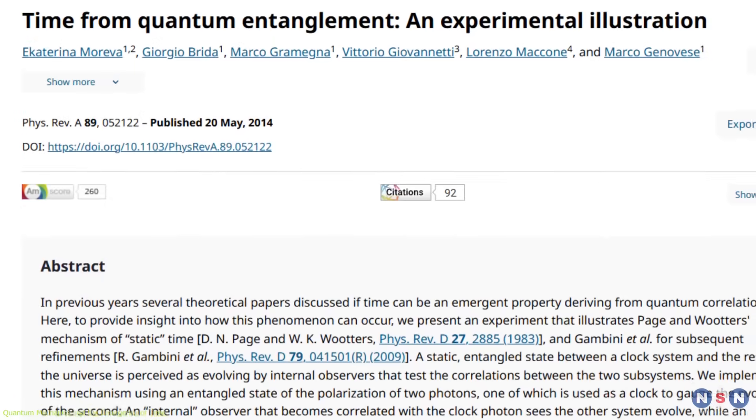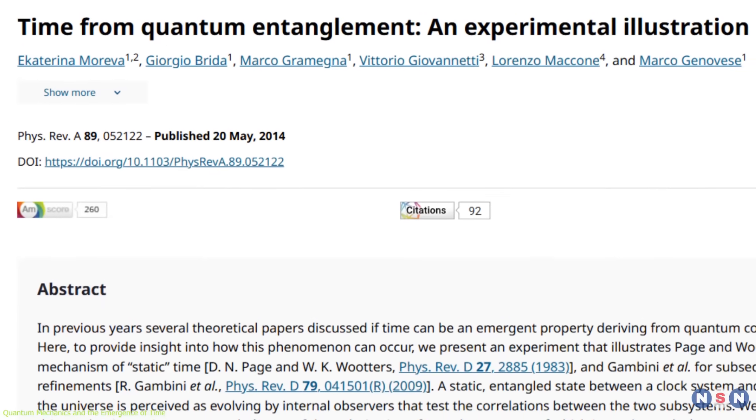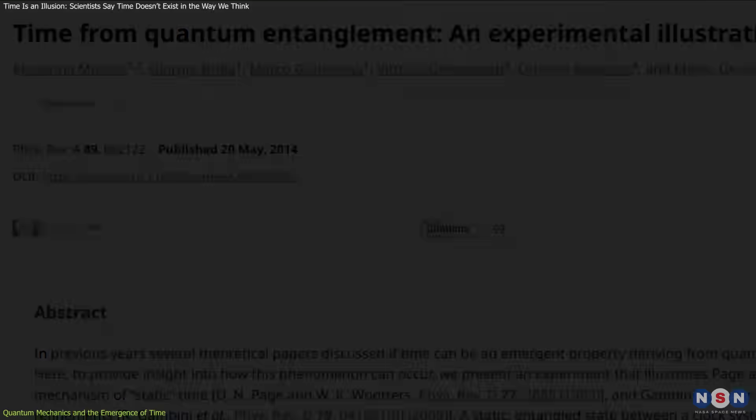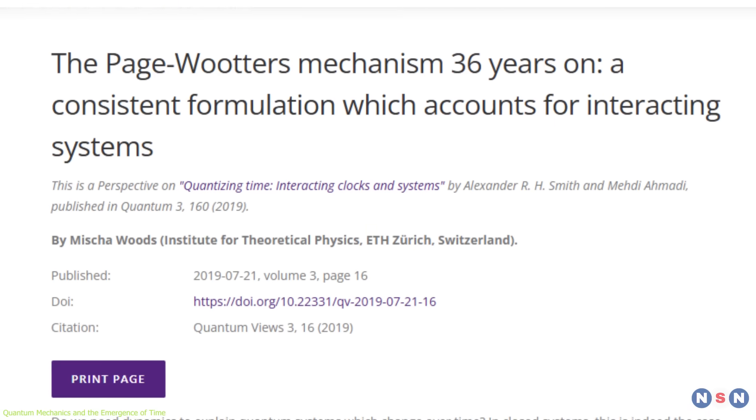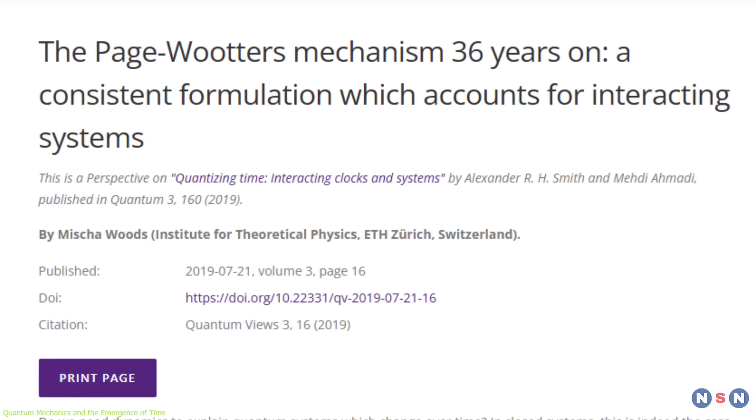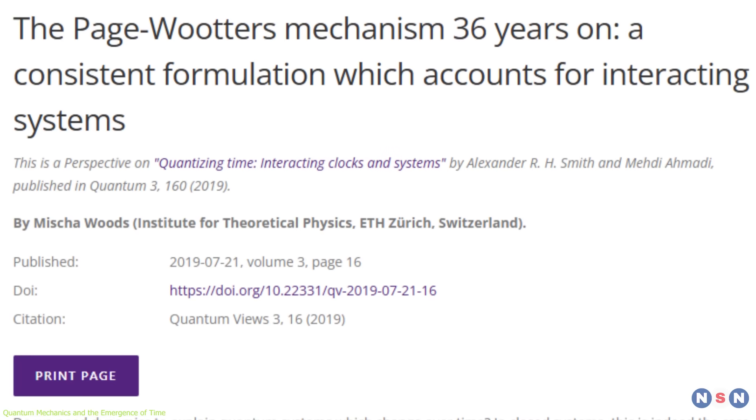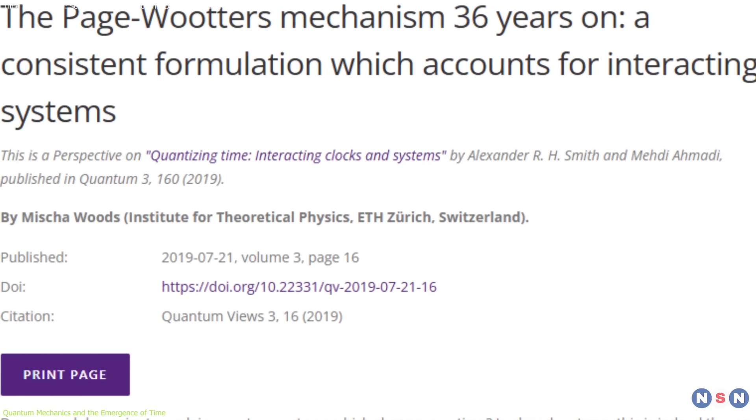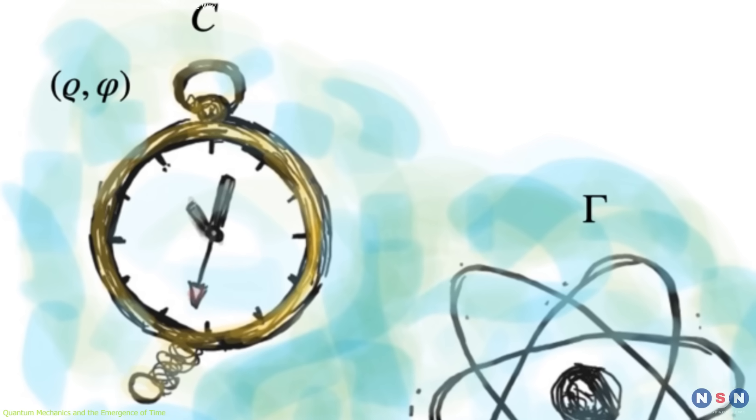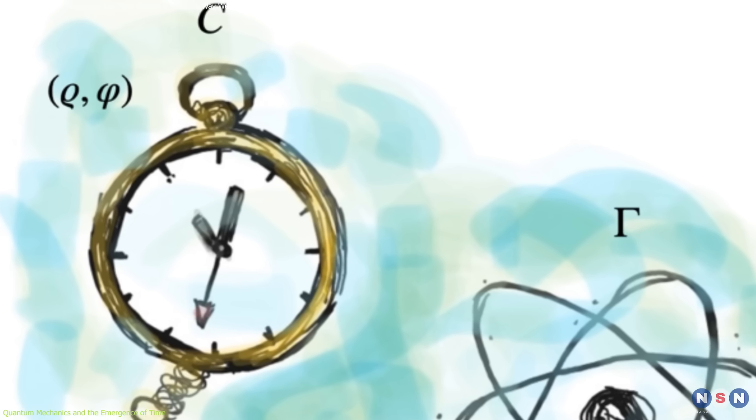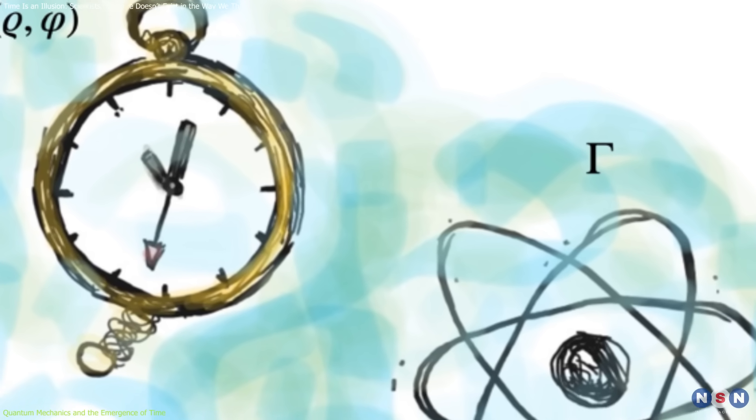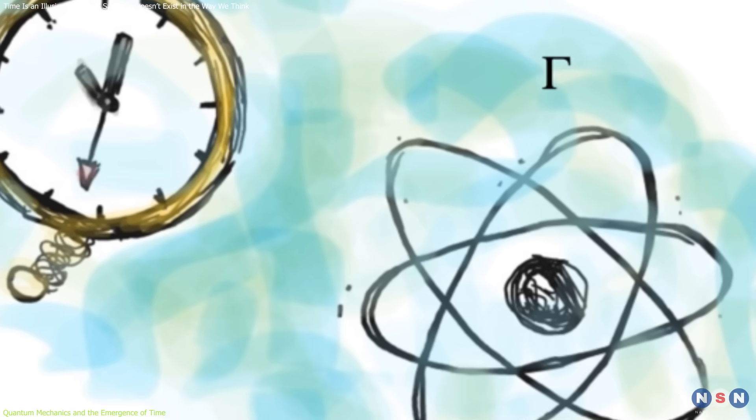Recent studies propose that time itself might emerge from quantum entanglement. The Page and Wooters mechanism, introduced in 1983, suggests that for an entangled system, time emerges through the correlation between subsystems. In this framework, one part of the system can act as a clock, and its entanglement with another part gives rise to the perception of time's passage.